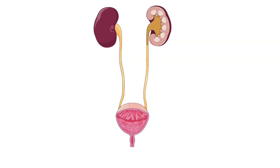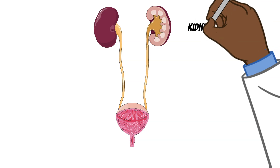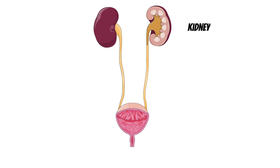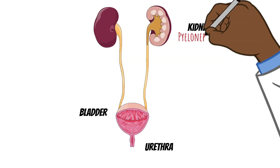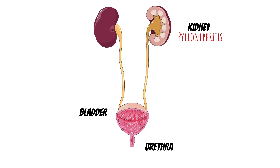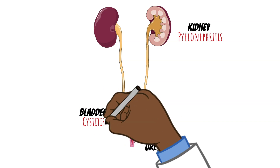The urinary tract has three main parts: the kidneys, the bladder, and the urethra. UTIs can be divided into three categories depending on which part of the urinary tract is affected. If it affects the kidneys, it's pyelonephritis; for the bladder it's cystitis; and for the urethra it's urethritis.